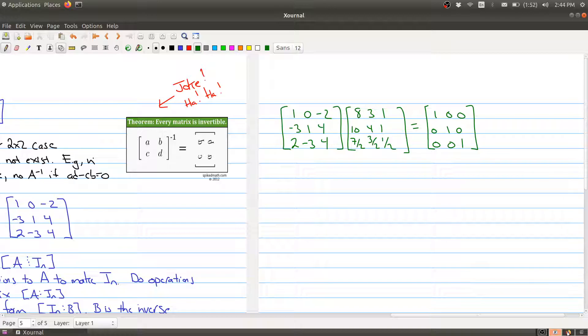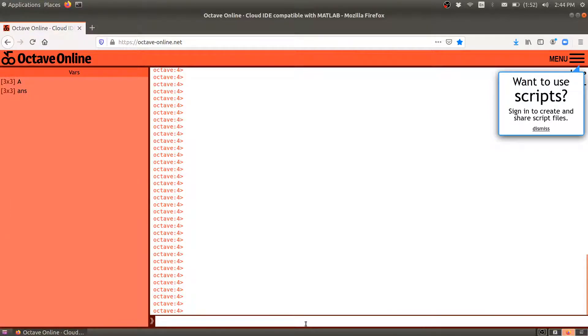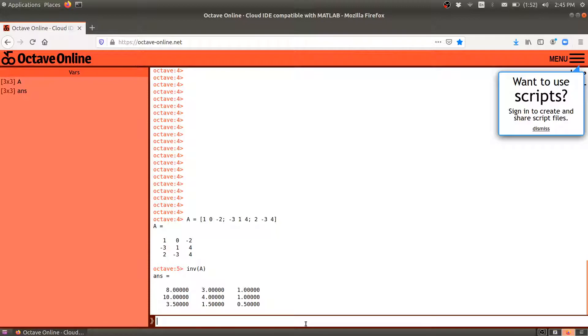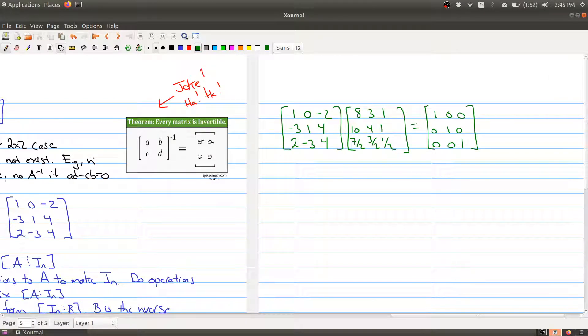As you might expect, this is something that you should be able to do in Octave or MATLAB. Here is the exact same matrix that we've computed the inverse, so I'm just inputting it into Octave. And I say I want to find the inverse. Well, here's the command: inv(A). And there we go. That's the answer. So we're getting 8, 3, 1, 10, 4, 1, 3/2, 1/2, and a half. And if we go back over to what we had, this is 3/2, that's 1/2, 1.5, and this is a half. So we are actually getting the right answer. Just in case you're not following the video and just looking at the notes, you'll need to know what the Octave command is: it's just inverse A.